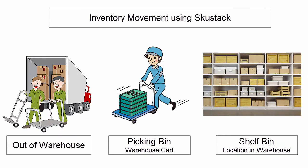When you pick an item using SkewStack, the inventory will be transferred from the bin location where the item is stored to a picking bin. When the item is shipped, the inventory is transferred out of the picking bin and out of the warehouse.